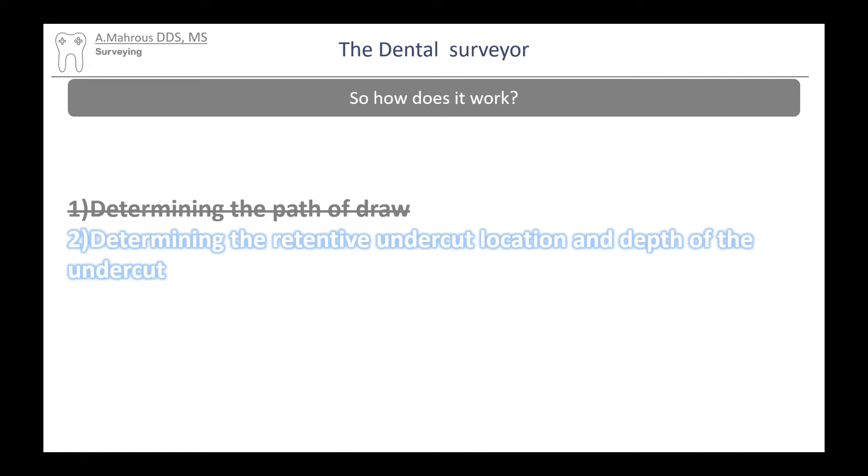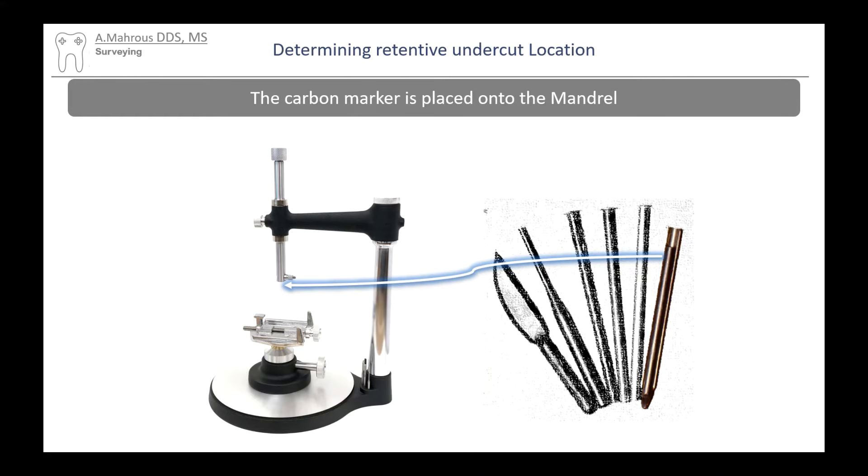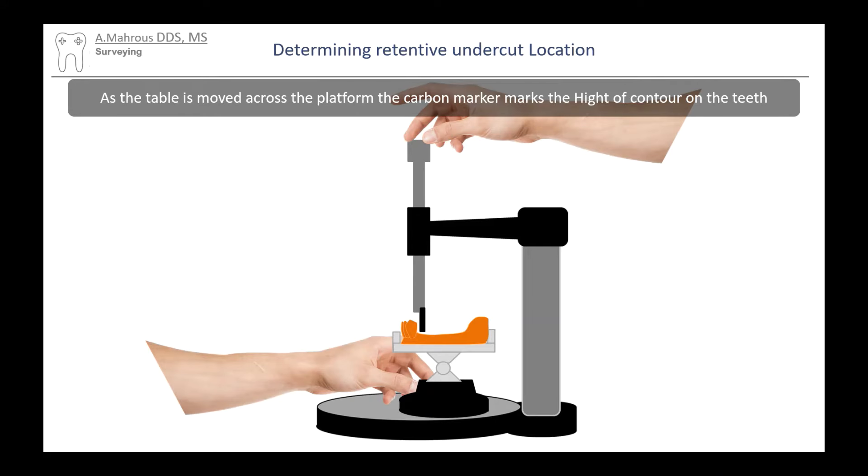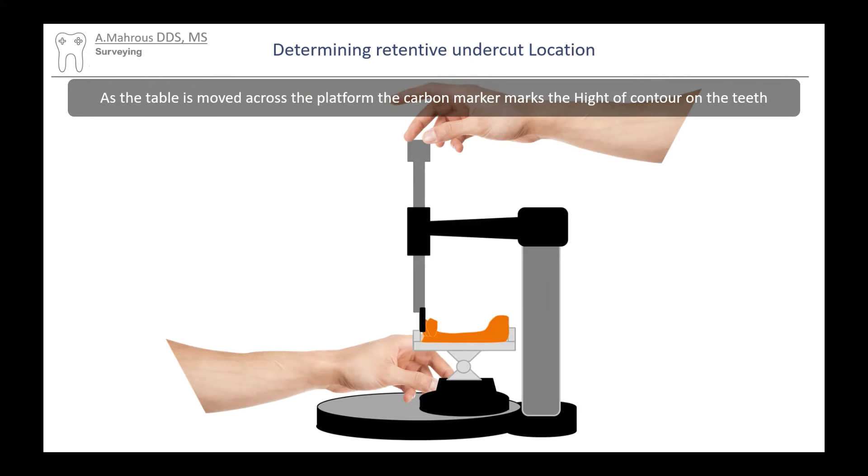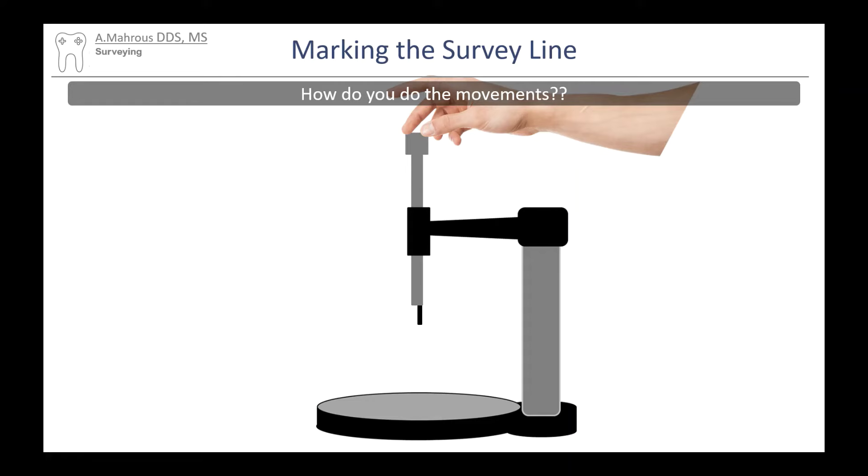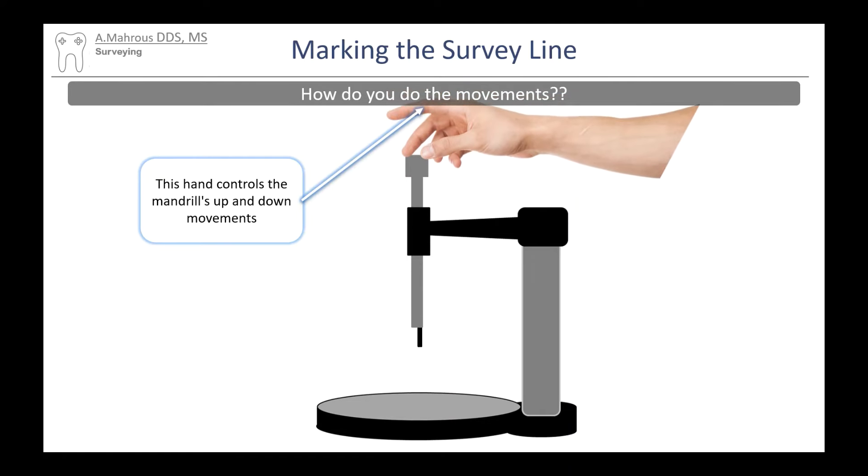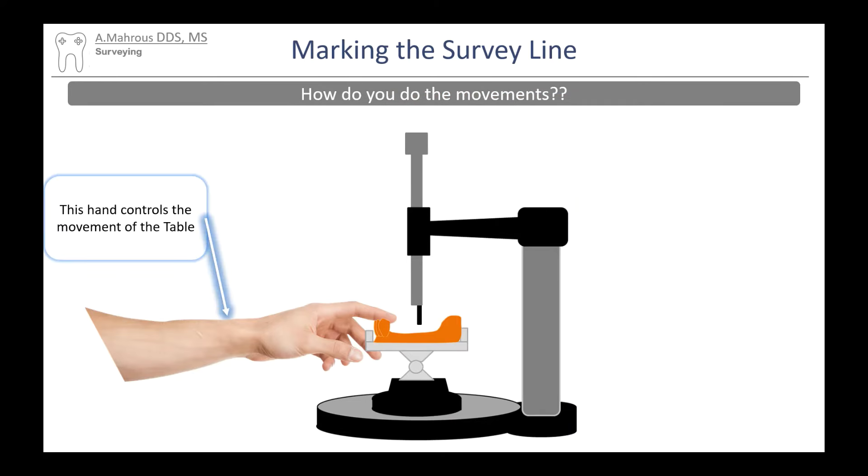So we're done with determining the path of draw. Now let's move on to determining the retentive undercut location and depth of the undercut. For this we'll go ahead and use the lead marker and the metal shield. We'll place those on the mandrel and we'll go ahead and go through the process of what we call drawing the survey line. To do that, we're going to use both our hands to move the table across that platform and at the same time we're going to be moving that mandrel up and down to coincide with the tooth contours.